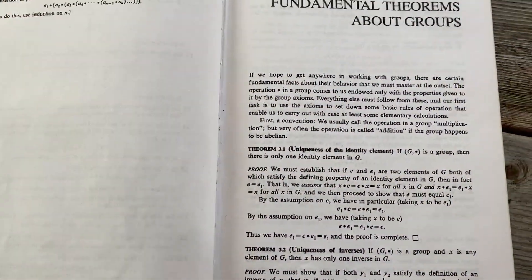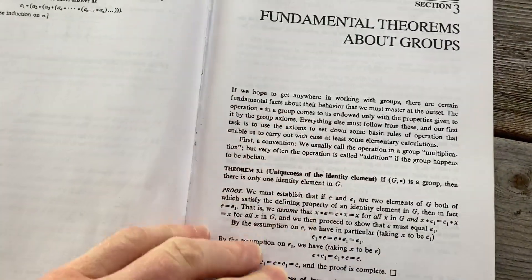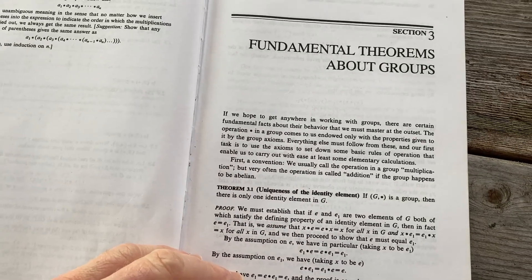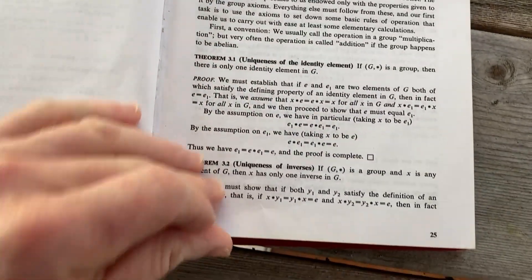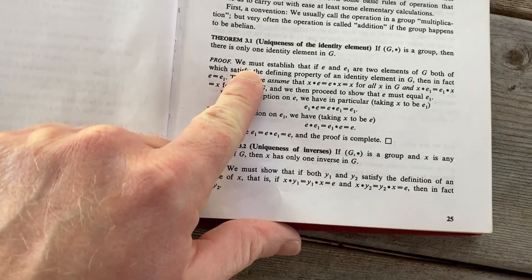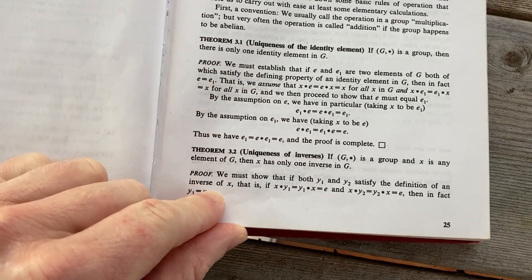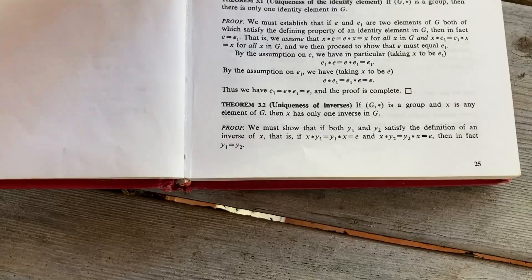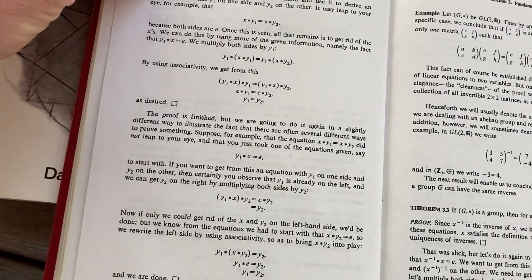Here's where you start seeing more proofs. You have to prove certain things are groups, and that's very tedious and long but it's still a good exercise. Here's where you start proving some results. Fundamental theorems about groups. For example here he proves the uniqueness of the identity element, the uniqueness of inverses.